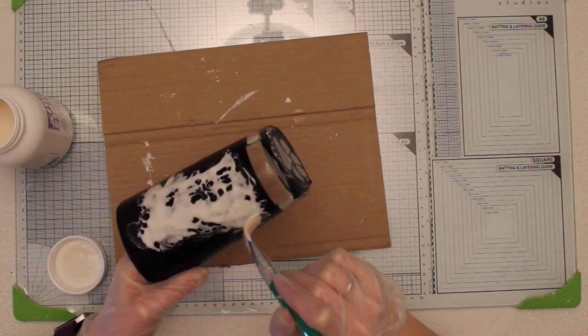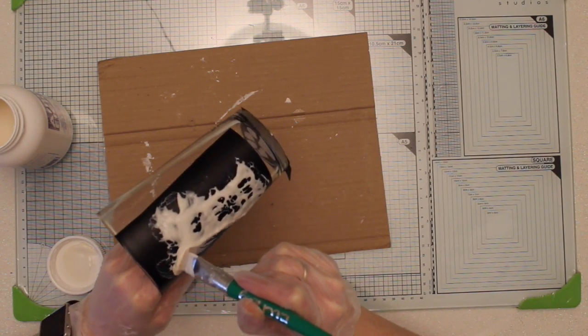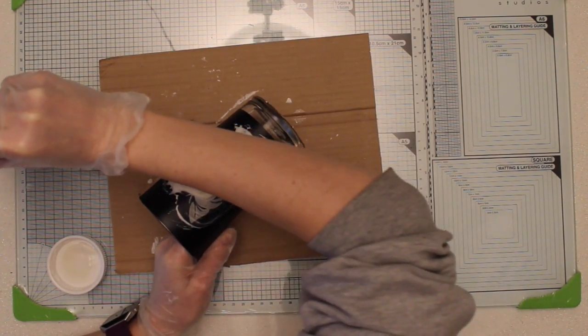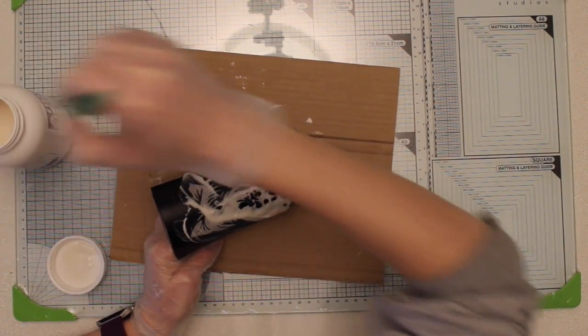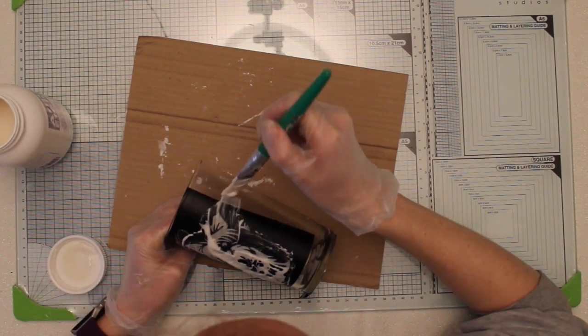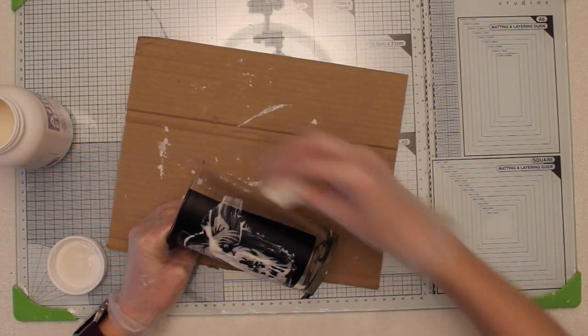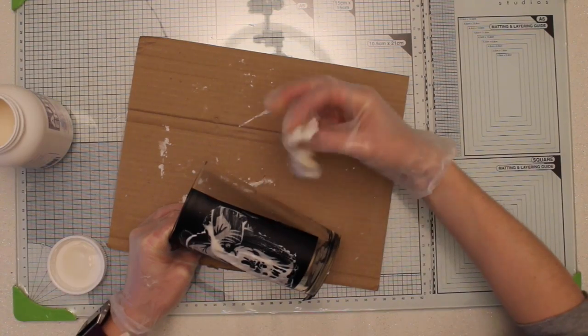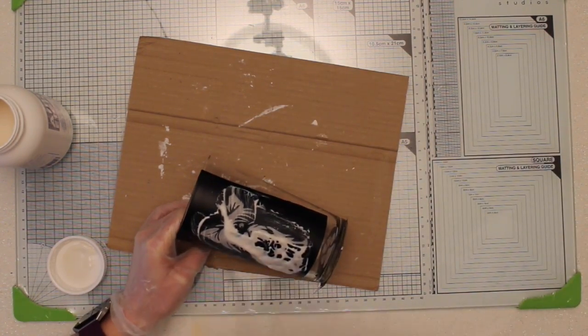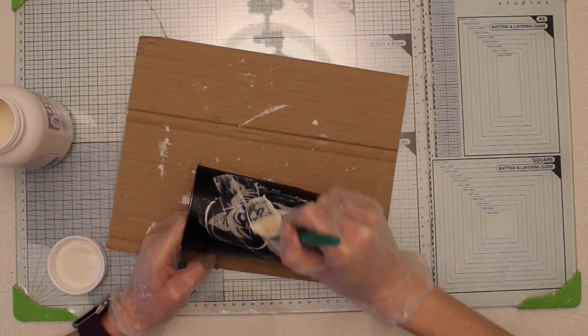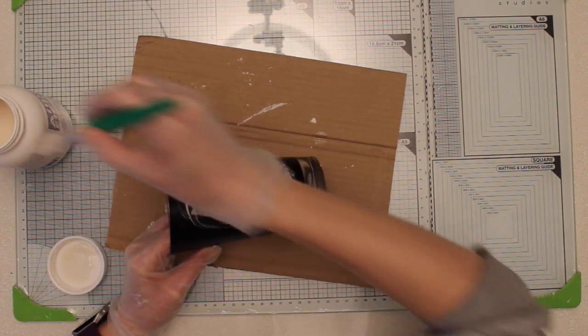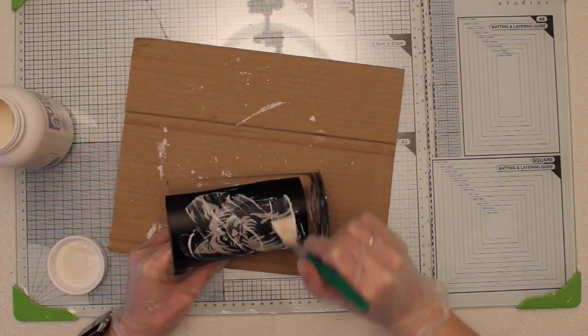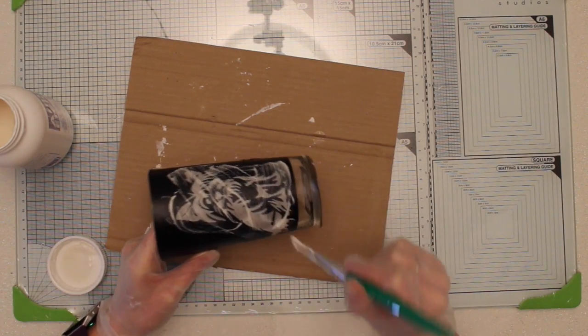When around 15 minutes is up all I then do is take my paint brush and just scrape away all the excess cream and pop it back in the bottle. If you do get any etching cream on the glass just use a wet wipe or a bit of wet kitchen roll to just wipe it off really quickly and if you're quick it shouldn't be a problem. All the excess, if you scrape it off and pop it back in the bottle then you can reuse it again.